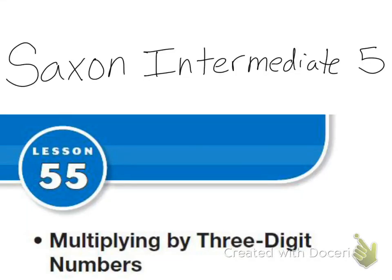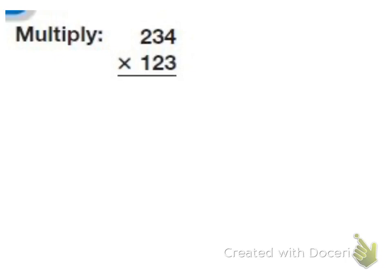Hello everyone. Today's lesson is lesson 55, multiplying by three-digit numbers. When I multiply by three-digit numbers, what I'm really doing is multiplying by each place value. So 234 times 123 is the same as 234 times 100 plus 234 times 20 plus 234 times 3.